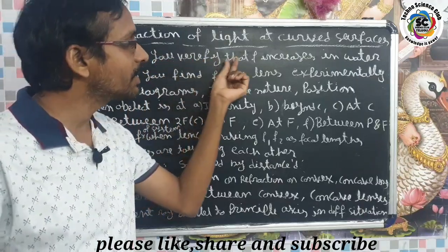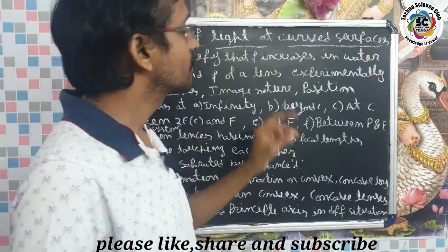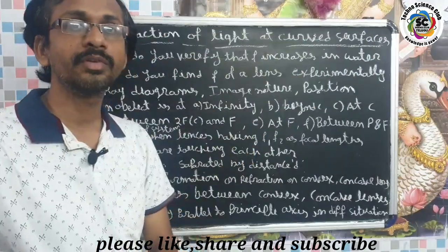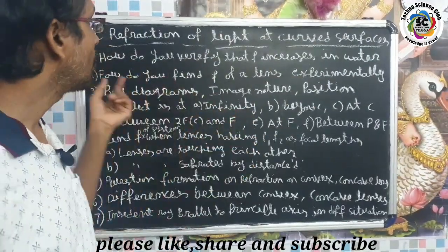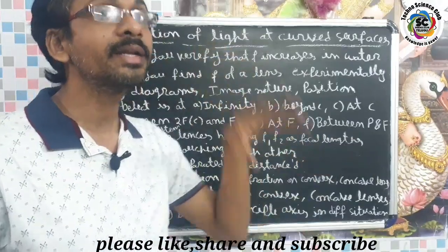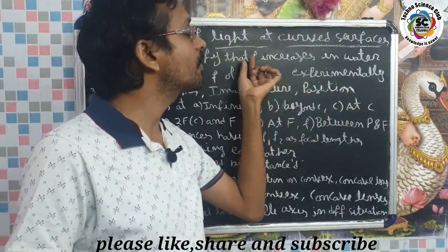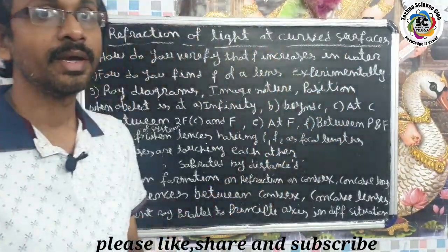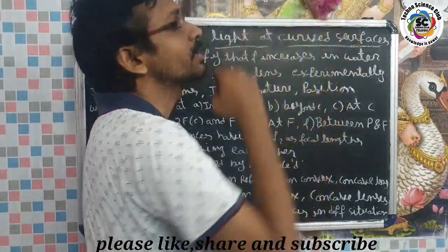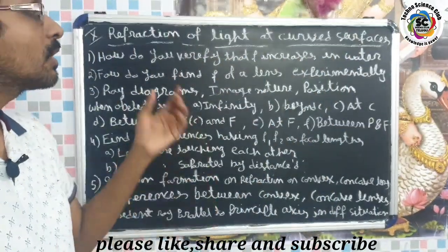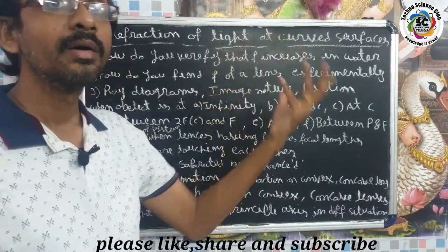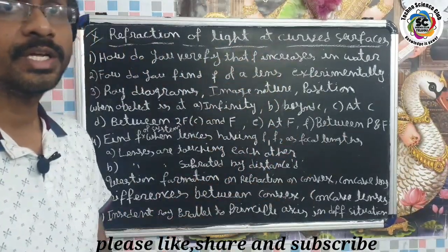First question: How do you verify experimentally that the focal length of a lens increases in water? This is a very important question covering both eight marks and four marks.